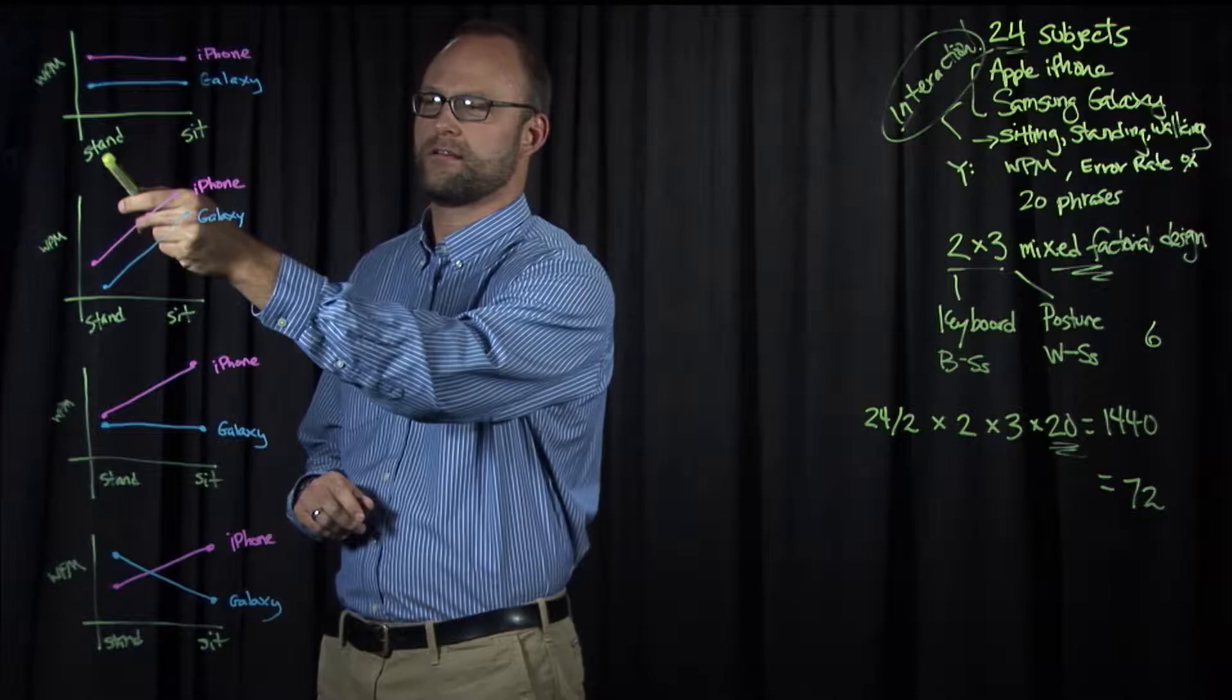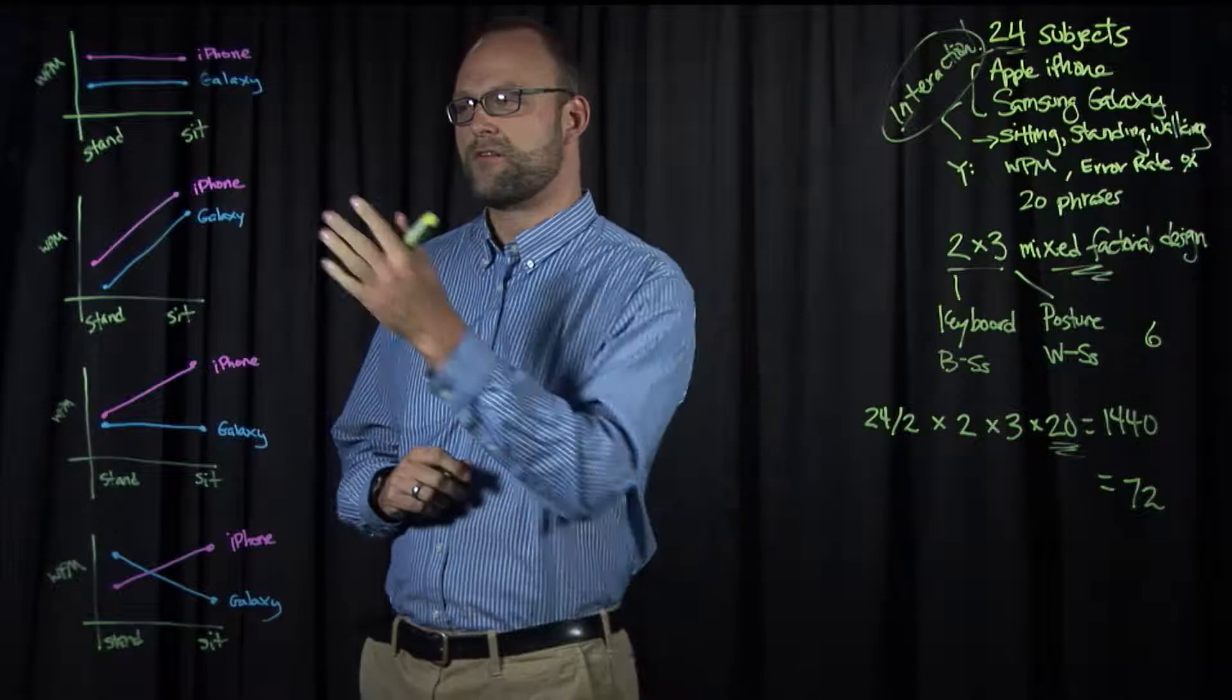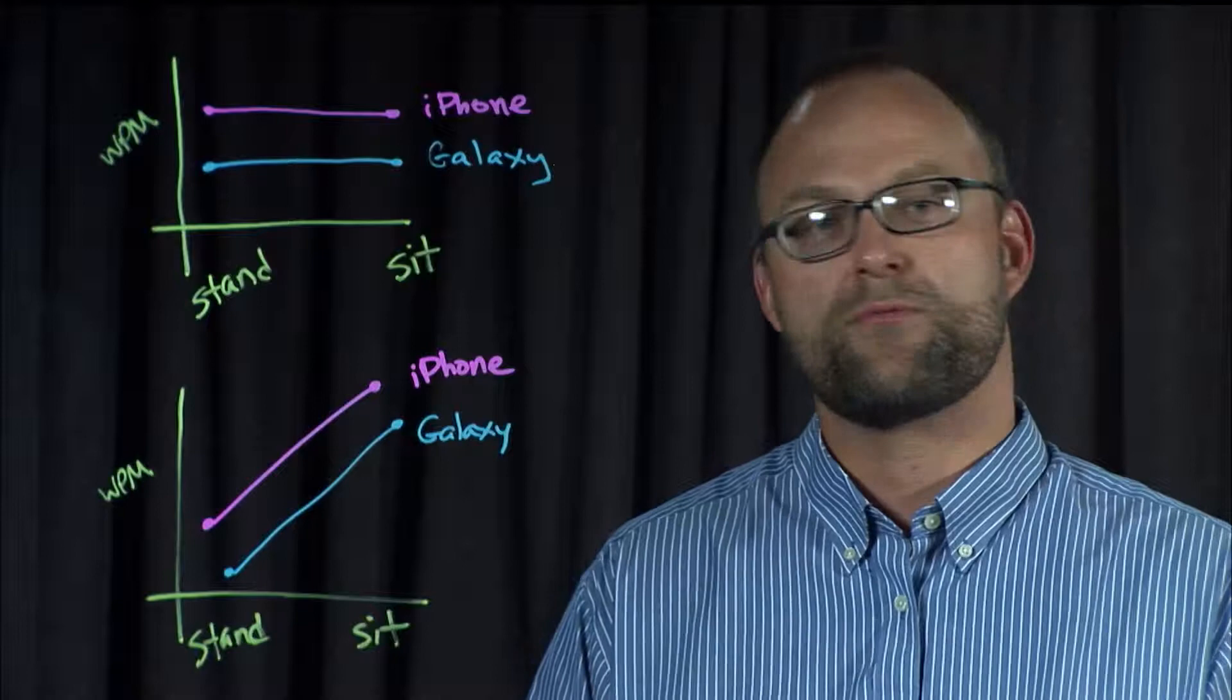On each graph we see, on the x-axis, the words stand and sit. We talked about our study where we're going to have actually three postures - standing, sitting, and walking - but for now we'll just consider two. On the y-axis we have words per minute, but really it could be any of our measures.